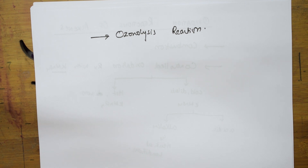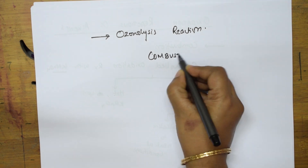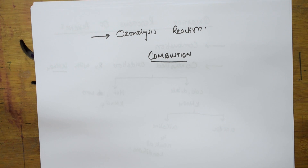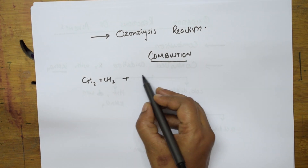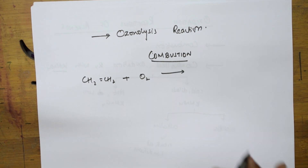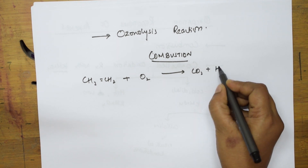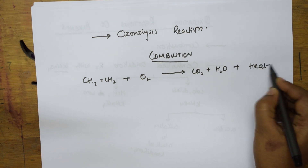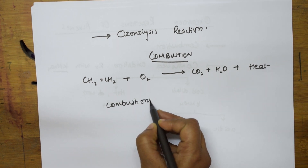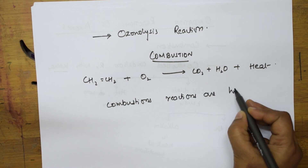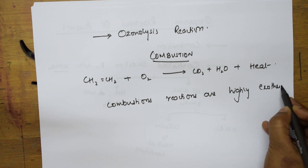The first type of oxidation reaction is combustion reaction. Combustion means burning in the presence of oxygen — that is the most important thing. Alkenes have a double bond, and just like alkanes, alkenes also undergo combustion reactions. Whenever alkenes react in the presence of oxygen, the combustion products are always carbon dioxide and water. A large amount of heat is evolved, so combustion reactions are always highly exothermic in nature.